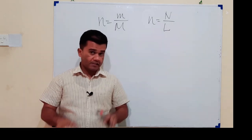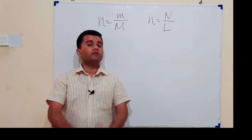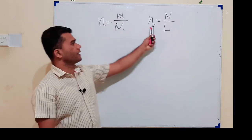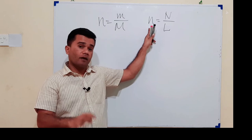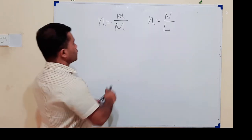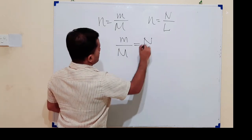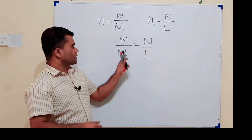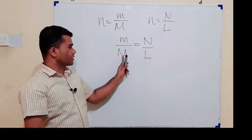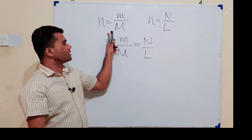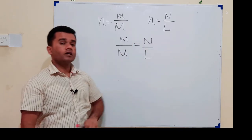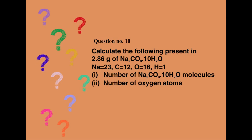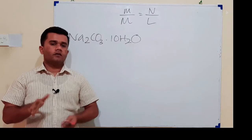The relationship between mass and number of molecules or atoms can be combined into one equation by merging n = m/M and N = nL to get N = (m/M) × L. Since molar mass and Avogadro's constant are both constants, if mass is given you can find number of atoms or molecules directly, and vice versa.